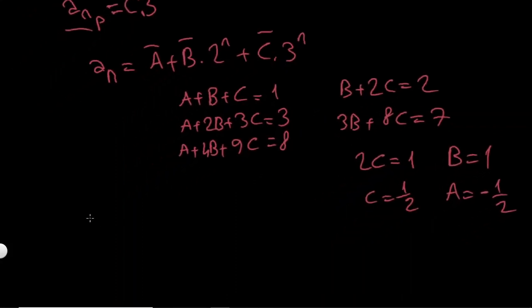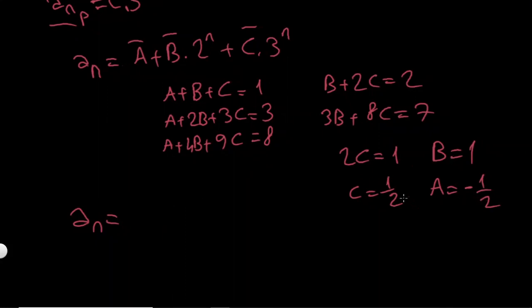So my general solution a_n is going to be A is minus 1 over 2 plus B times 2 to the n, which is just plus 2 to the n plus 1 over 2 times 3 to the n. So this is my answer.